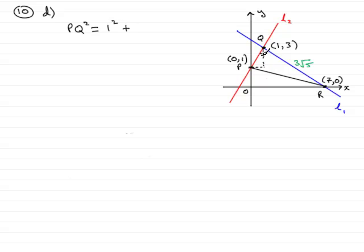Plus the difference in the y coordinates which would be representative of that height there, so that would be 3 take away 1, that's 2 units, and we would square that.